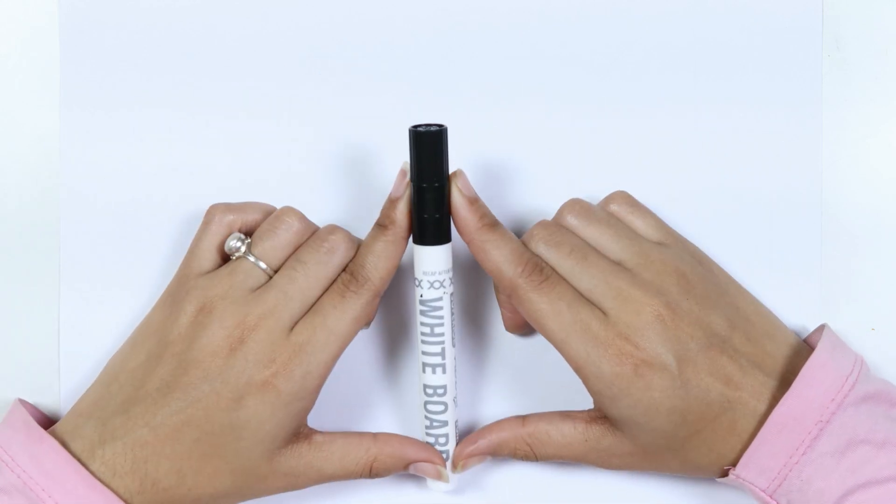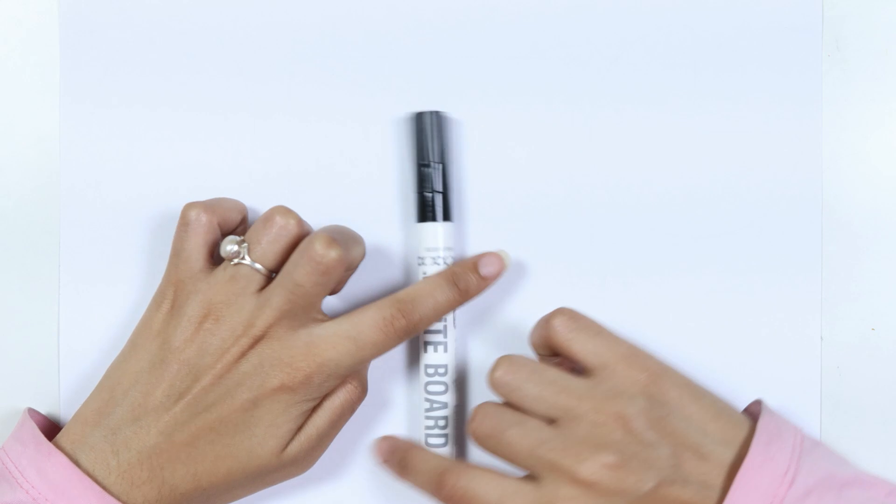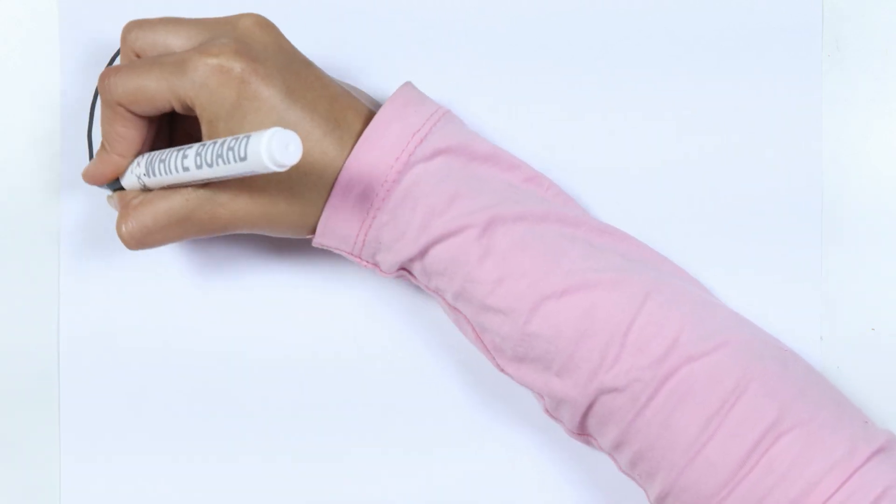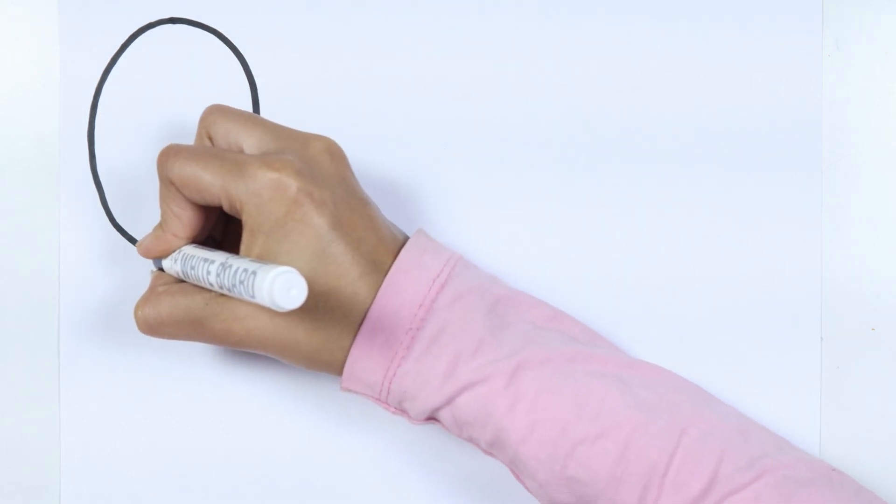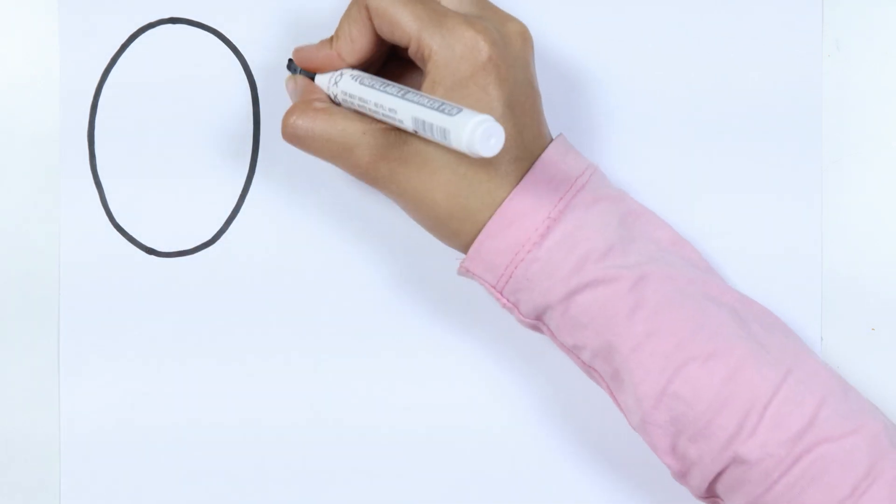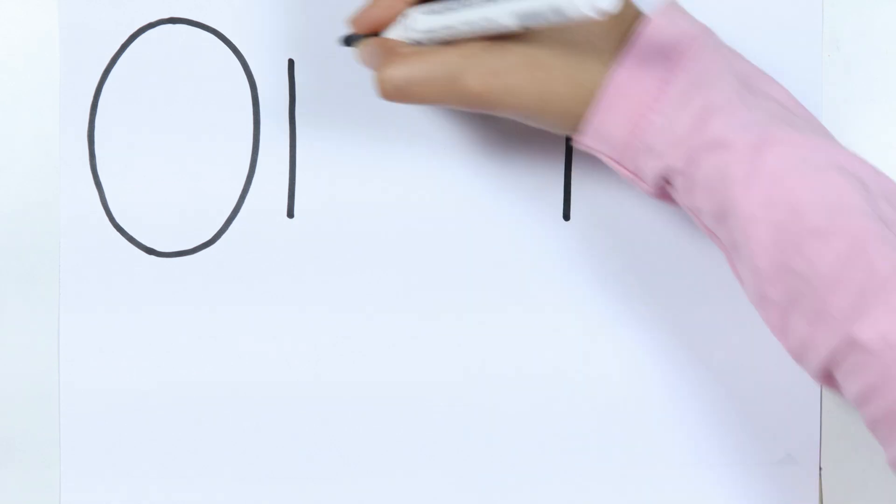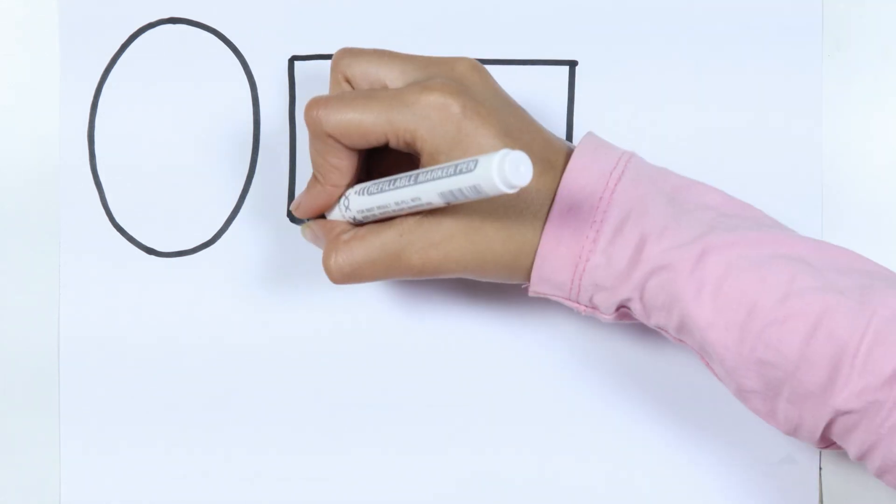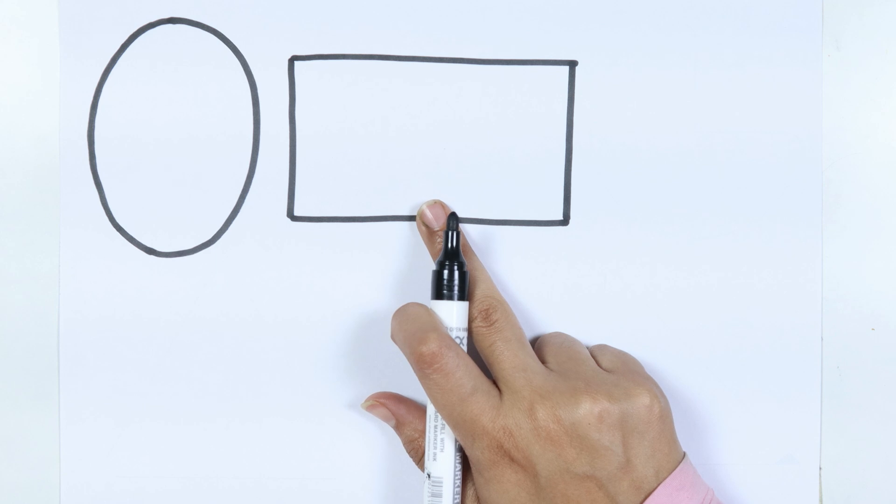This is the black color. Which color, kids? This is the black color. Ellipse. Rectangle.